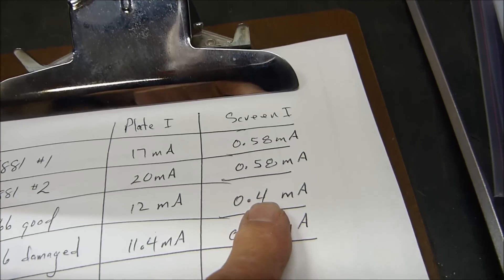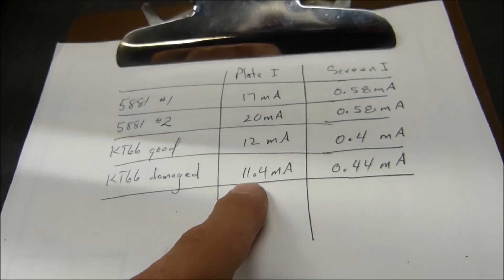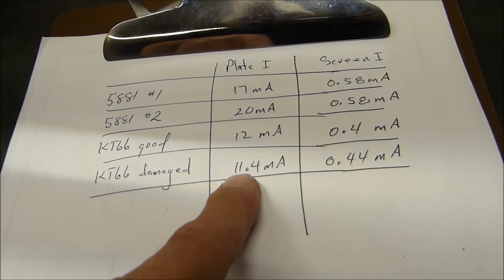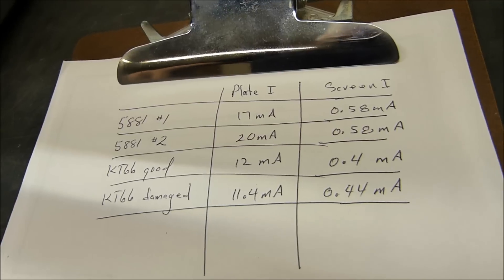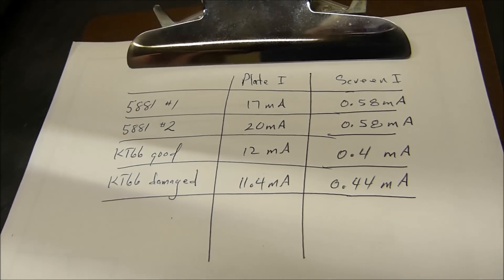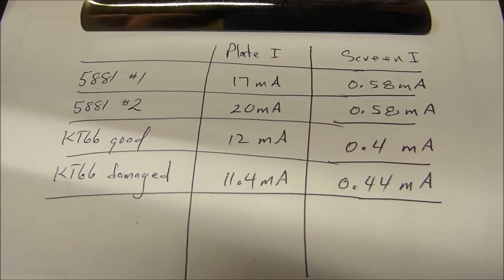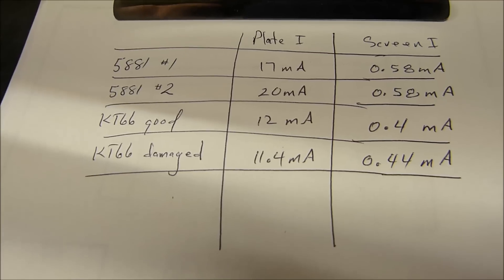The good KT66 measures 12 milliamps and 0.4 milliamps of screen current. The bad one is 11.4 milliamps and 0.44. You would say, hmm, what's really wrong with that tube? It really doesn't measure wrong. It really doesn't look like there's anything big deal wrong with it.